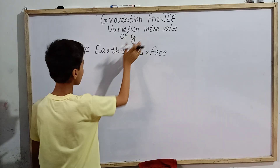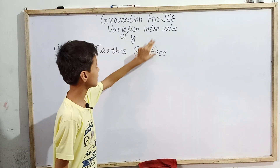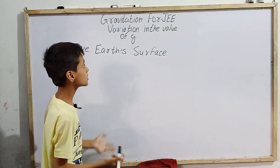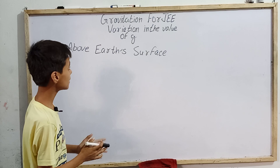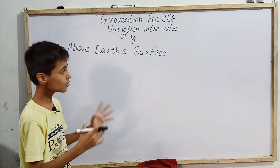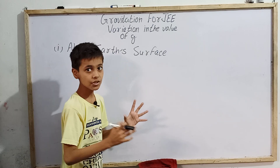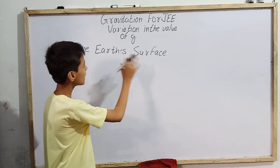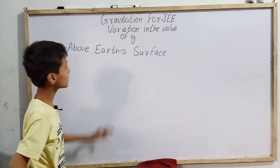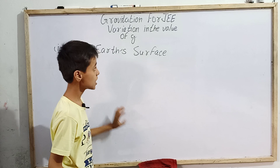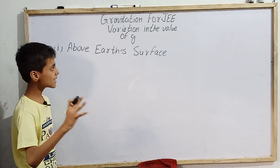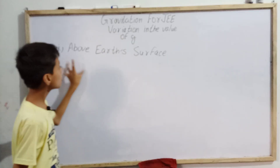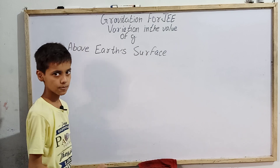This video may be in many parts because there can be many kinds of variations in the value of acceleration due to gravity. As we go above Earth's surface, its value may vary. As we go to depth, its value may vary. Due to the rotation of Earth, its value may vary. But our today's video is totally based on how the variation in the value of g occurs when we go above the Earth's surface.